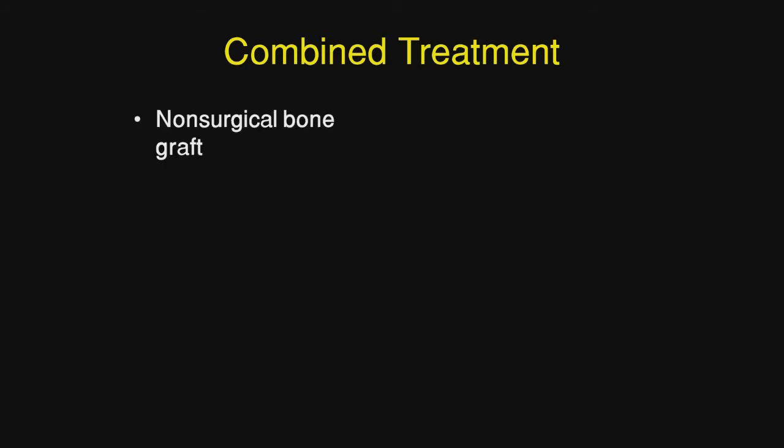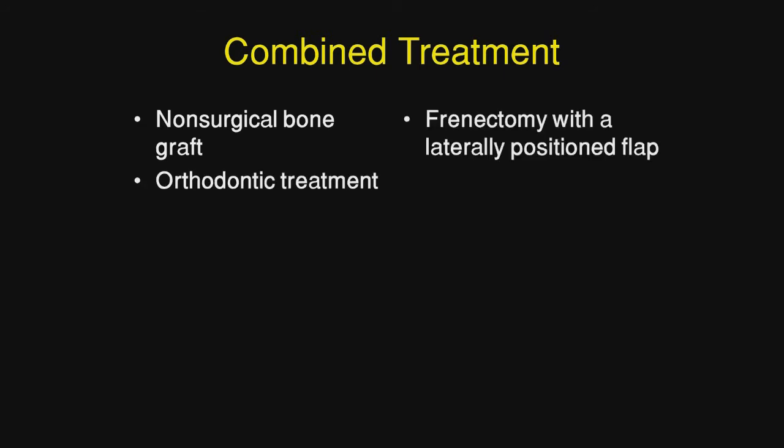Now let's talk about combined treatment — this is one of my favorite cases. We did a non-surgical bone graft, which will be the topic of another video. Orthodontic treatment was done, and finally the frenectomy with the lateral position flap was done, and finally aesthetic crown lengthening was done, which ended up being a failure, and I'll explain to you why.